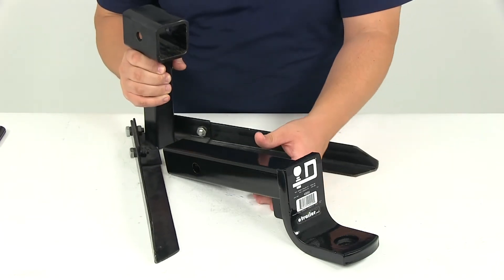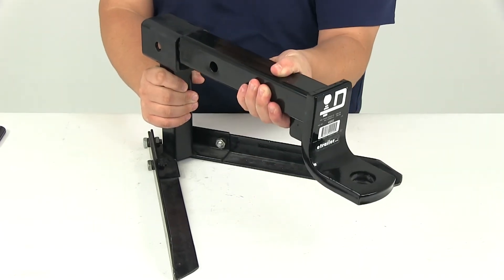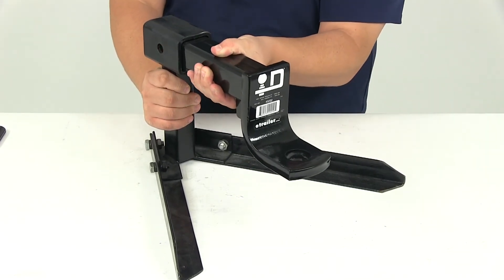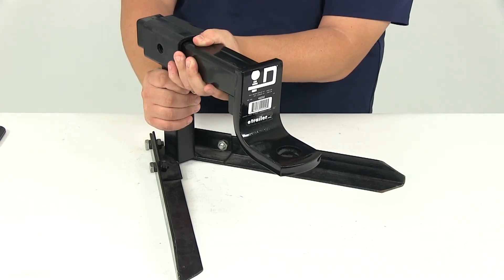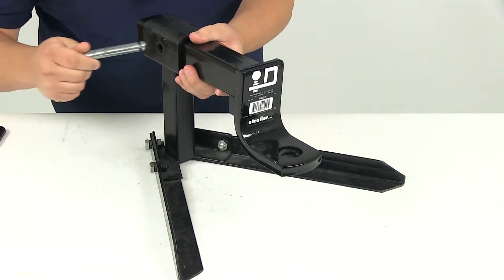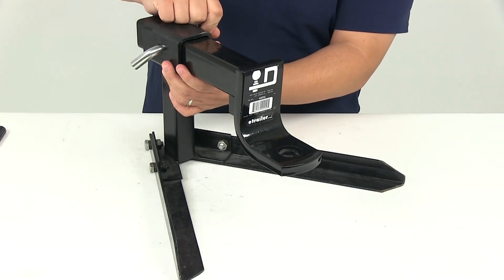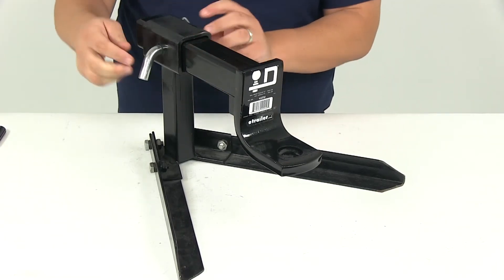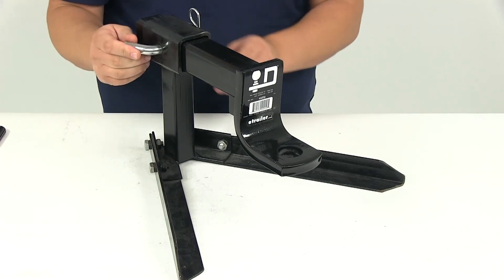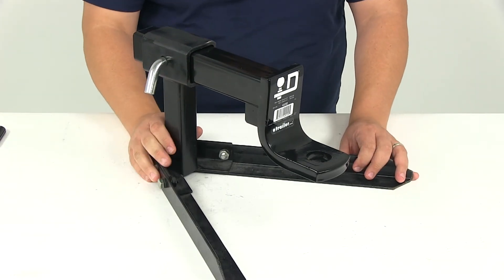The install is really easy. You're just going to take the ball mount and place it into the receiver tube of your hitch. You're going to slide it in until you get your pinholes to line up with one another and then you'll need to insert your hitch pin and clip or your hitch pin and lock. Again those are going to be sold separately. I'm using part number PC3, a 5 eighth inch pin that comes with the clip.